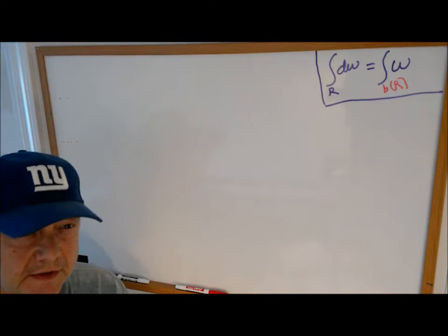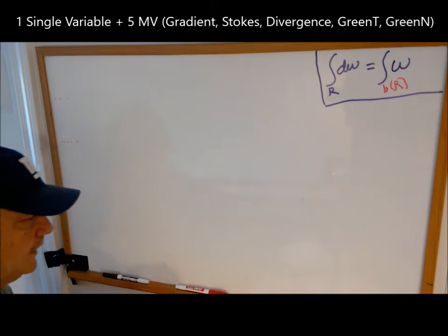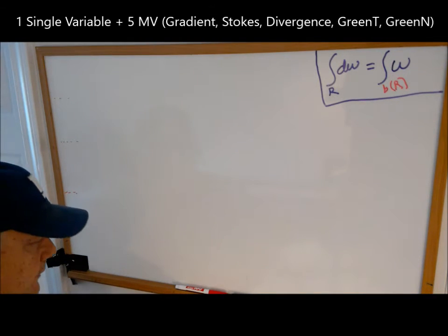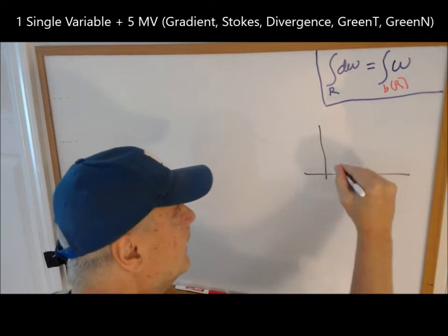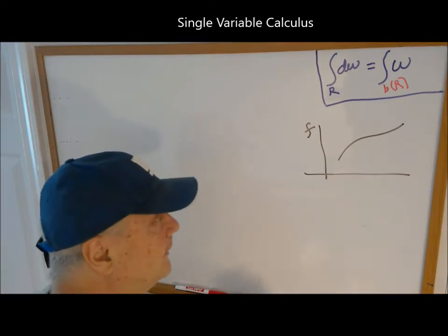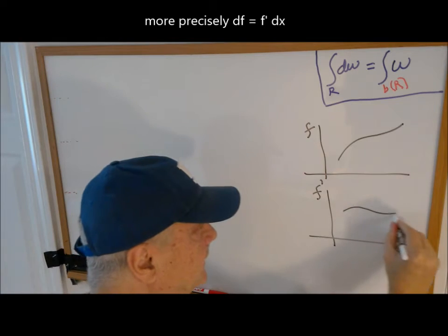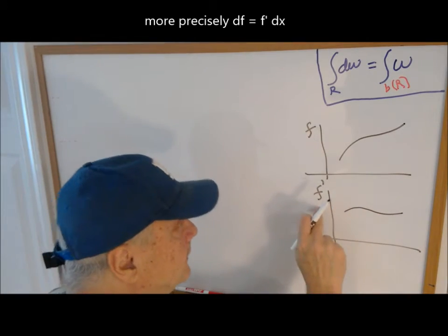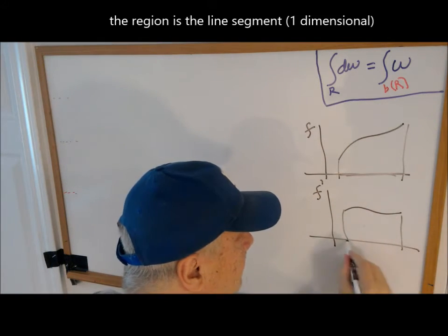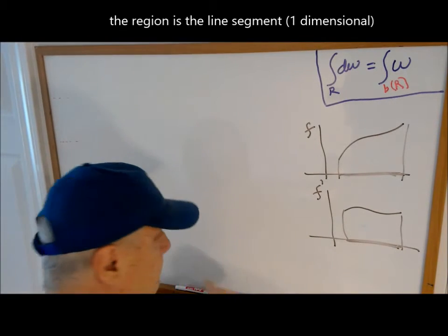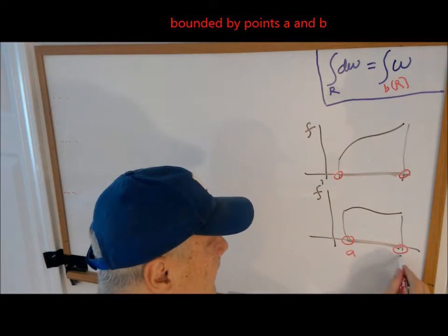Now there are six theorems that support this general equation. The first is single variable calculus. We'll do that very quickly, and we'll do that one in brown. If we have an object which is a function, the differential for that object would be the derivative of that function. So object, differential. The region is this line segment, and it's bounded by these points A and B.